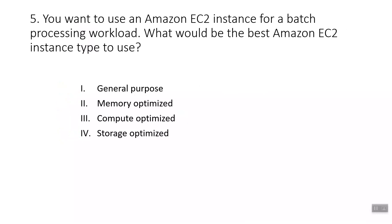The fifth question: you want to use an Amazon EC2 instance for a batch processing workload. What is the best EC2 instance type? The answer is compute optimized, because they are ideal for compute-bound applications that benefit from high-performance processors. We use these instances for batch processing workloads and media transcoding.